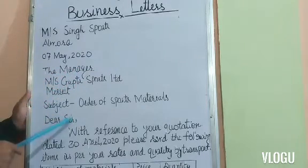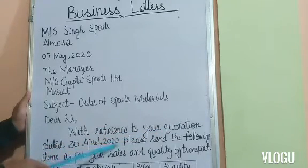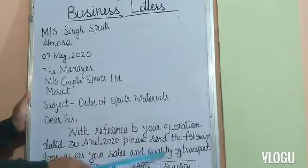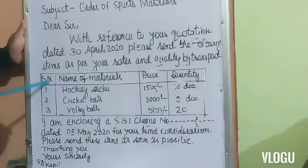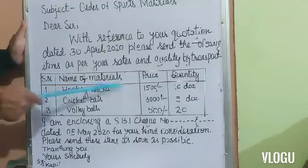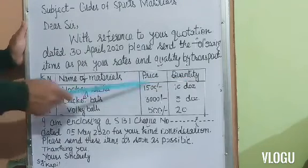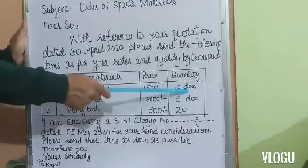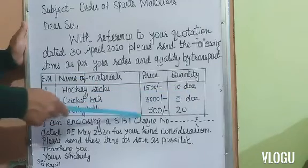Now our main body will start. With reference to your quotation dated 30th April 2020, please send the following items as per your rate and quality. I will write a table with serial number, name of materials, price, and quantity — including hockey sticks, cricket bat, and volleyball — with quantities and prices listed accordingly.